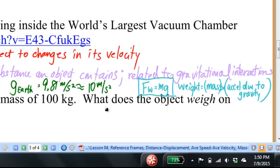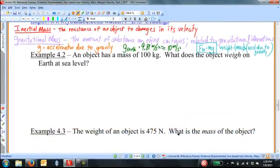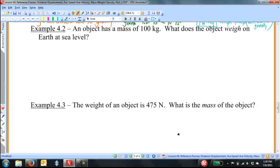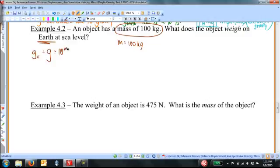Here are a couple of numerical examples. We'll start with example 4.2. An object has a mass of 100 kilograms. What does the object weigh on earth at sea level? We begin with what we know. We know this object has a mass of 100. We also recognize that when we're talking about earth, we'll use the acceleration due to earth of 10 meters per second squared.